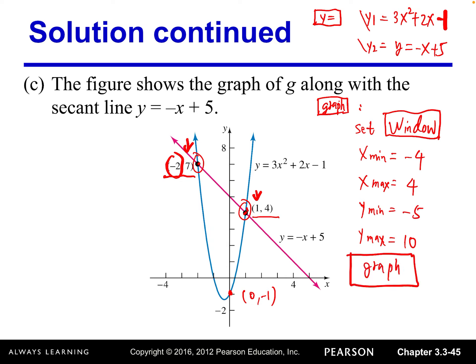Press Graph and you'll see a graph similar to the one shown. Or you can graph by hand — you already know how to graph a quadratic function and a line from previous chapters. Graph both on one rectangular coordinate system. Using a graphing utility is much easier and produces a nicer graph. That's the last slide of this section.